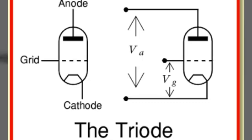We can see here this is the triode valve. The triode valve consists of an anode, cathode, and grid. Anode means positive, cathode means negative, and the grid controls the current. So this is just like a transistor. Always remember: these days, semiconductor transistors like BJT and MOSFET are used. Before this, triode valves were used.